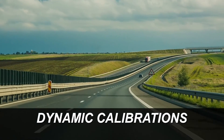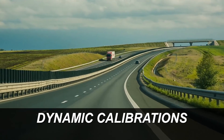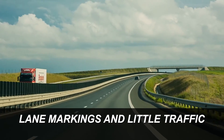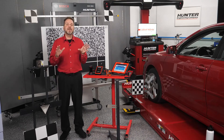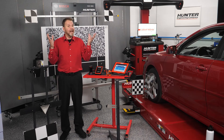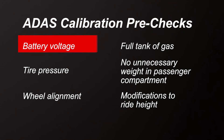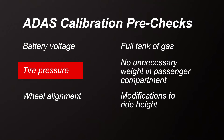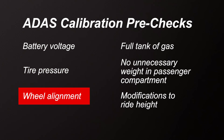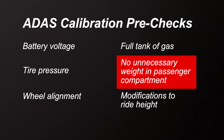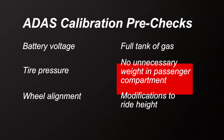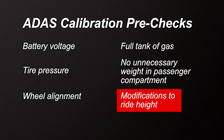Dynamic calibrations, which take place on the road, will require a nearby highway with lane markings and not too much traffic so the vehicle can travel at a reasonable speed without obstructions. The process begins with a series of checks to ensure the vehicle is calibration ready. These preliminaries include confirming battery voltage, tire pressures set to specification, and correct wheel alignment. It is also recommended that the vehicle have a full tank of gas and no unnecessary weight inside the passenger compartment. Check and verify ride height is correct and no modifications such as lifting or lowering of the vehicle have occurred, as that will affect sensor positions.